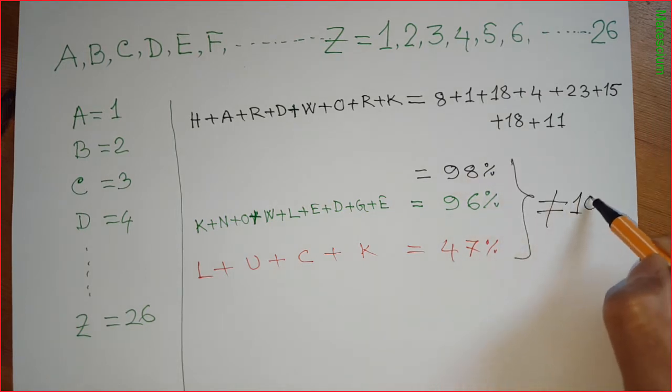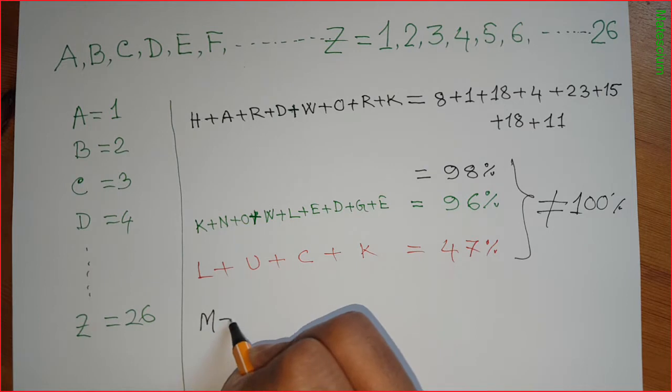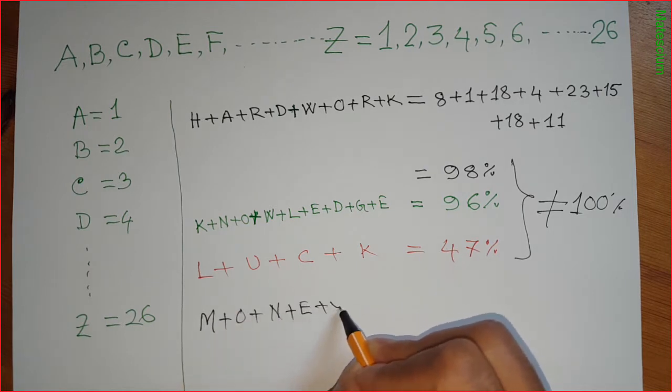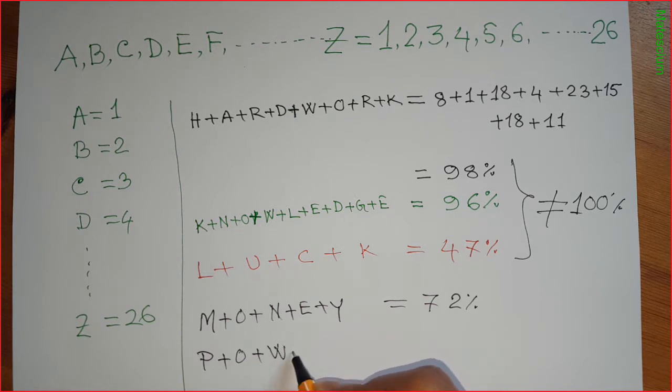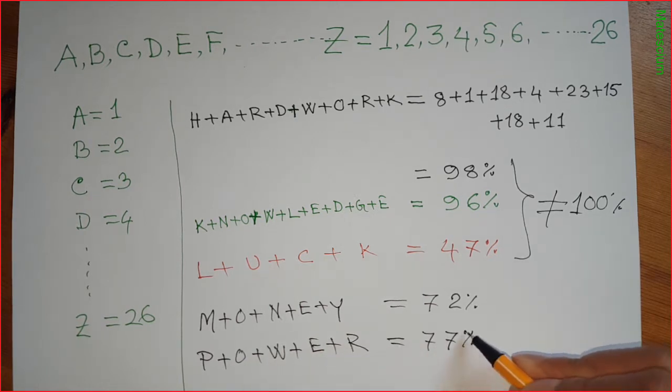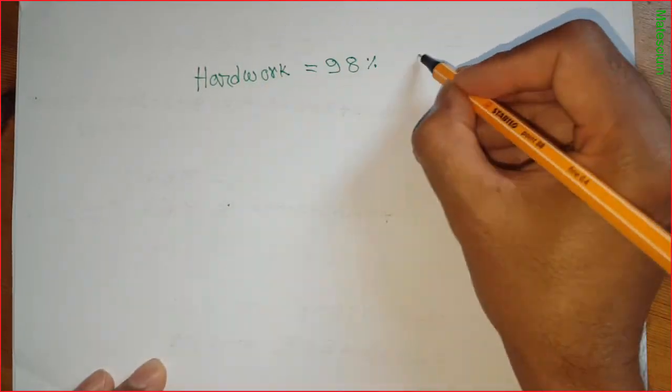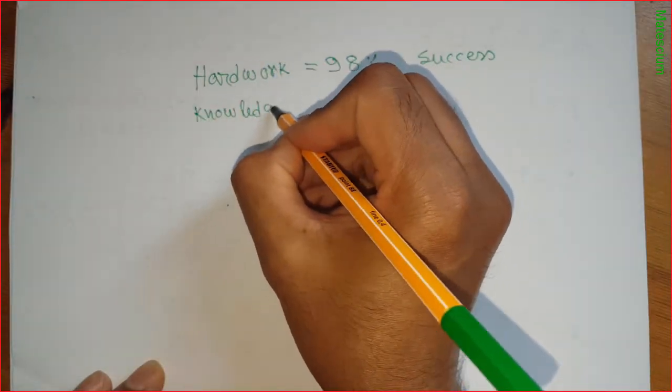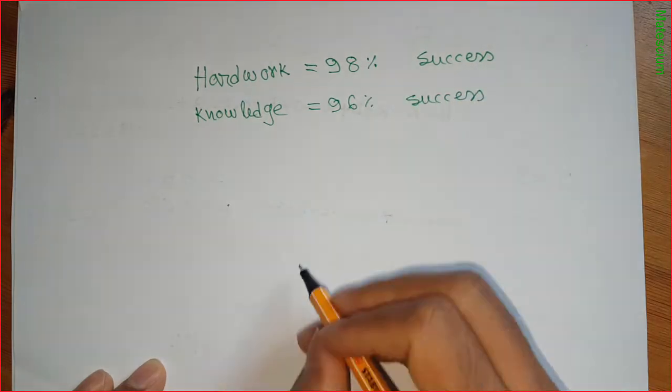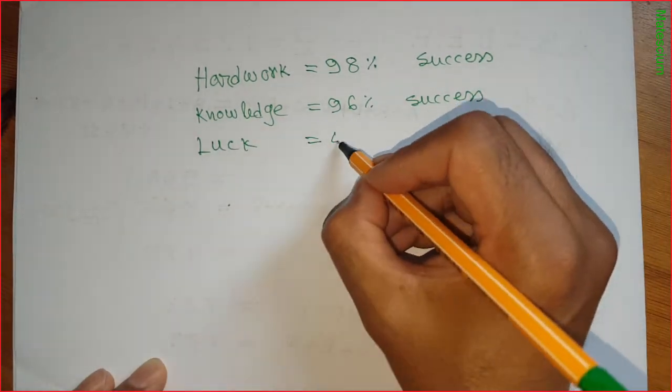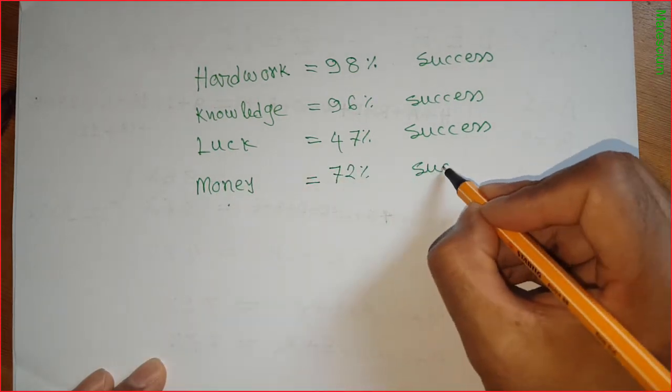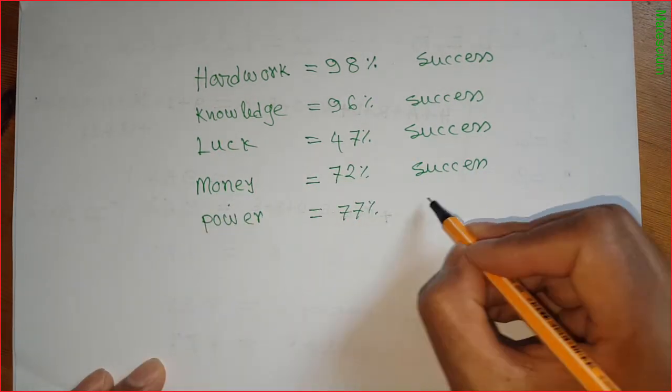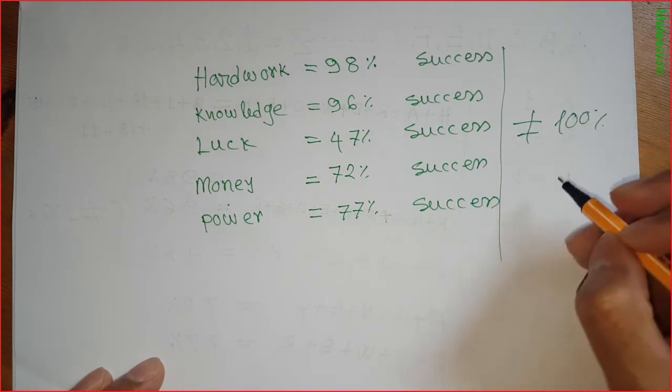What about money? You can get 72 percent success from money. Then what about power? 77 percent success you can get by using your power. That means hard work can give you 98 percent success, knowledge can give you 96 percent success, your luck can give you only 47 percent success, money means 72 percent, power is 77 percent. Then what else?